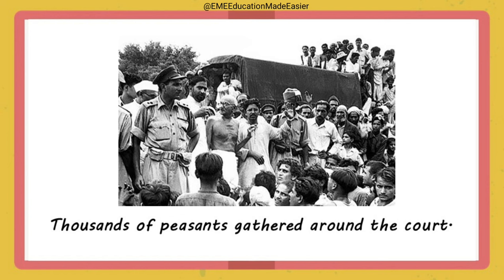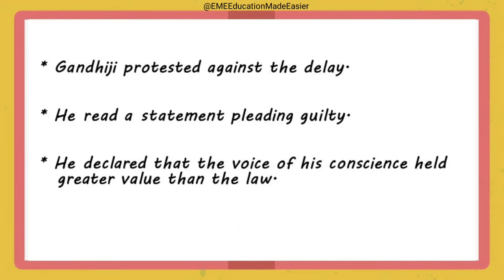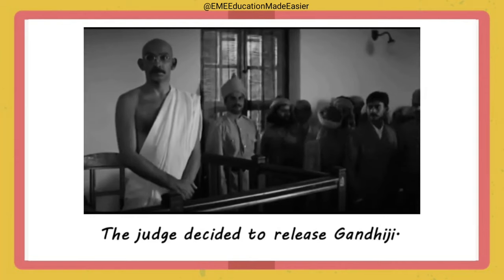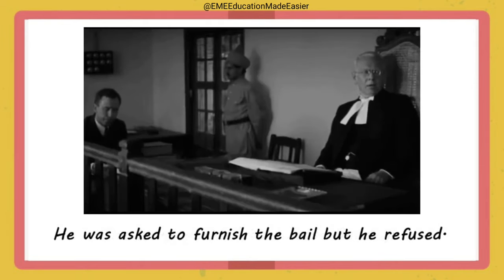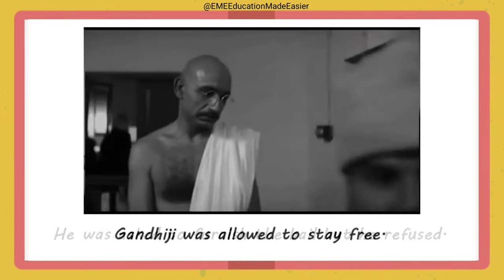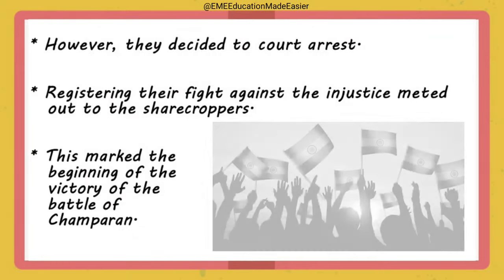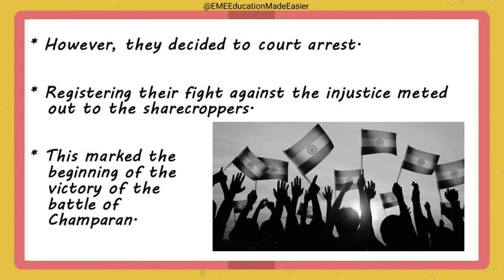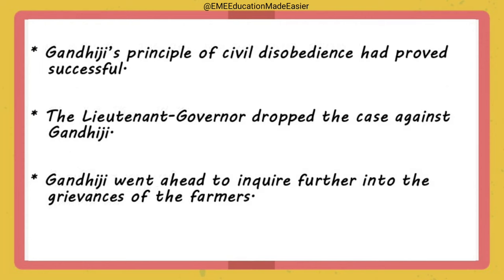As a result of mass unrest, the authorities postponed the trial. Gandhiji protested against the delay and read out a statement admitting he disobeyed the law but emphasized that the voice of his conscience held greater value than the law. The judge decided to release Gandhiji but asked him to furnish bail; Gandhiji refused again, the judgment was withheld for a few days but he was allowed to stay free. The lawyers decided to court arrest as per Gandhiji's wish, registering their fight against injustice made out to the sharecroppers — marking the beginning of the victory of the Battle of Champaran. Gandhiji's principle of civil disobedience proved successful; the lieutenant governor dropped the case against him. A defiant Gandhiji did not leave Champaran but went ahead to inquire further into the grievances of the farmers. About 10,000 testimonies were recorded.